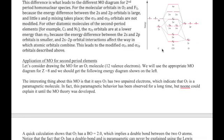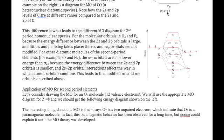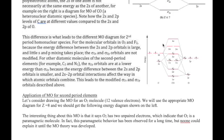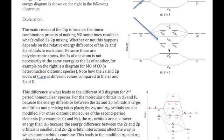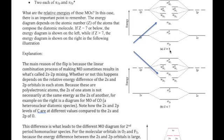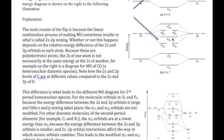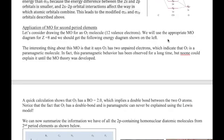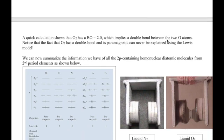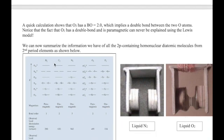To summarize: if you're dealing with molecules formed by boron, carbon, and nitrogen — nuclear charge less than or equal to 7 — you use the energy diagram where pi 2p is below sigma 2p. If you're dealing with oxygen, fluorine, and neon, you use the other energy diagram where sigma 2p is lower. Now let's look at how we apply this to a number of diatomic homonuclear molecules in the second period.